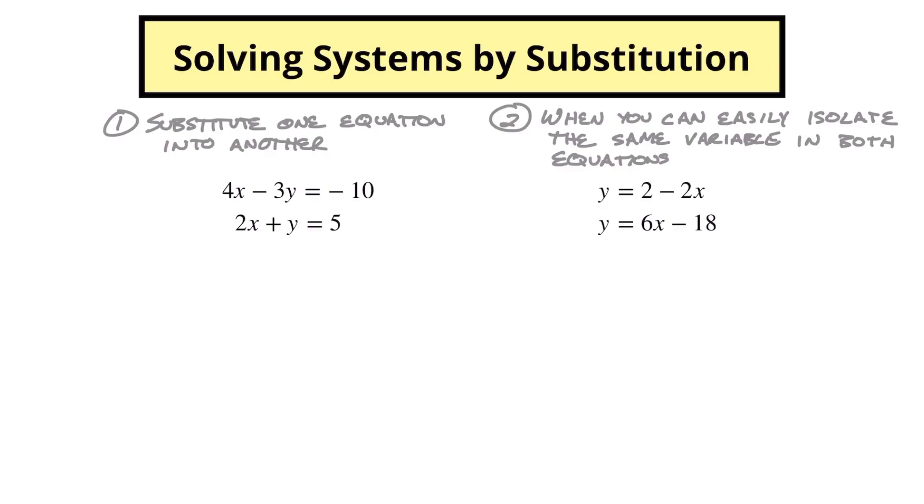Now the whole point behind this is that where these two lines meet, wherever they meet, the y values for both equations will be the same and the x values for both equations will be the same. So if we can find the y or the x by itself, then we can take that and say, well, that's the same thing as this other one. So if we can find our y value by itself, we know that this y is the exact same thing as this y here. So what I want to do is I want to get this y by itself.